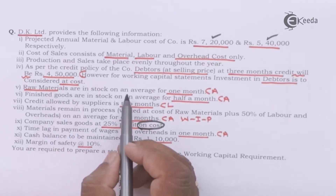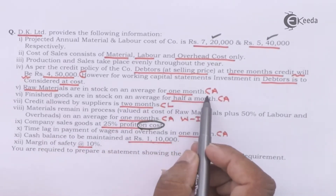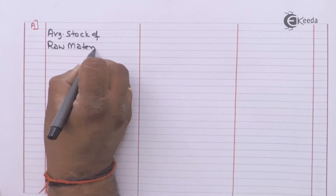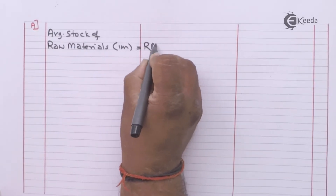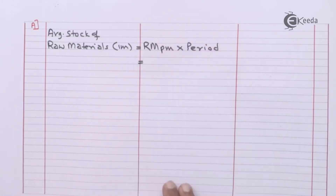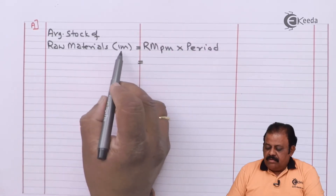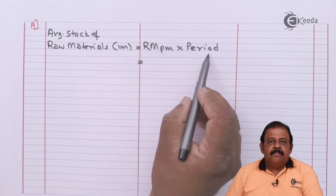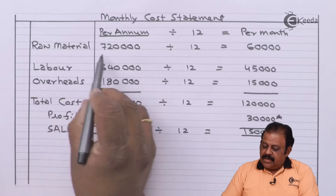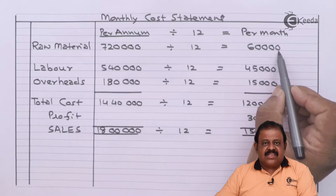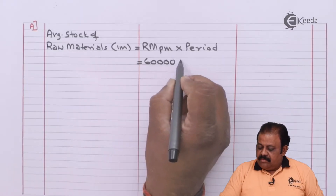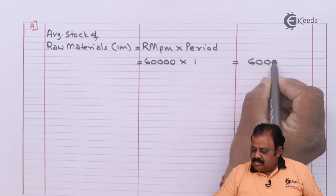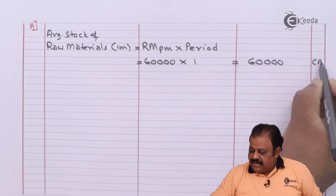Raw materials are in stock on an average for one month. Average stock of raw material equals raw material per month multiplied by period. Raw material per month is sixty thousand, multiplied by period of one month — so it will be sixty thousand. This will be a current asset.